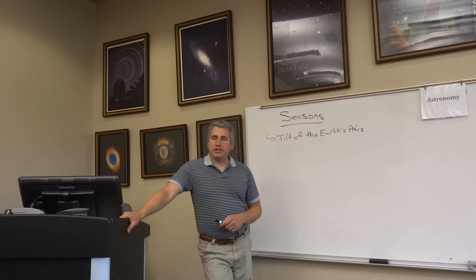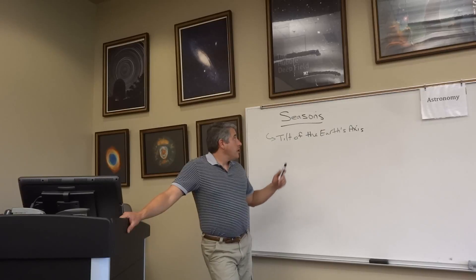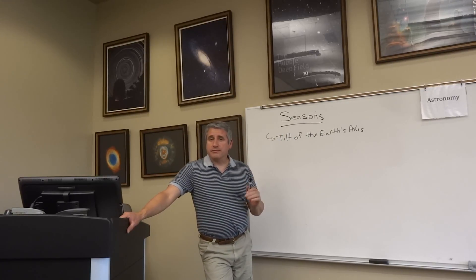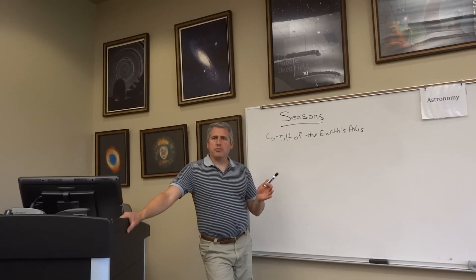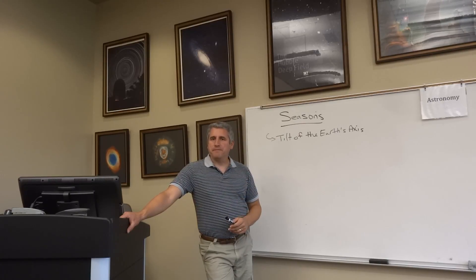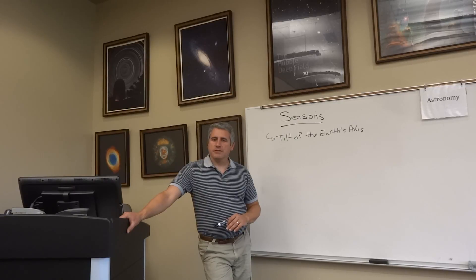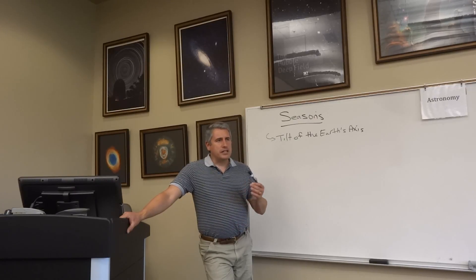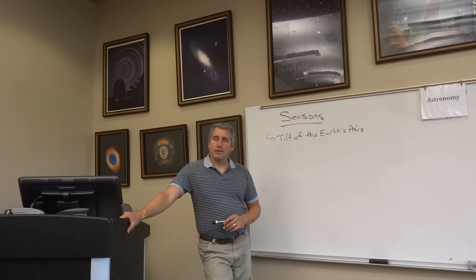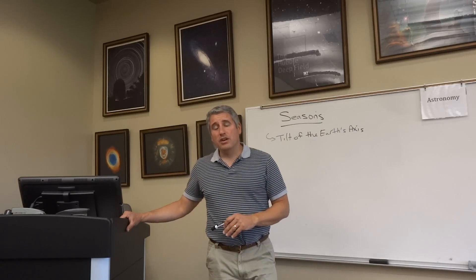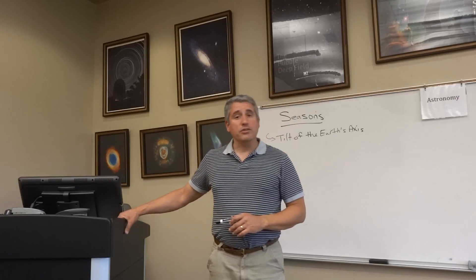So let's talk about the seasons. The seasons on Earth are created by the tilt of the Earth's axis. What is the tilt of the Earth's axis? At this point in time, it's about 23.5 degrees. I make that point because it varies between 22.5 and 24.5 degrees over the course of thousands of years.